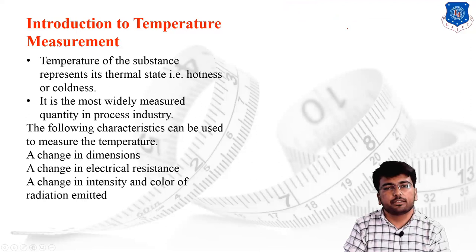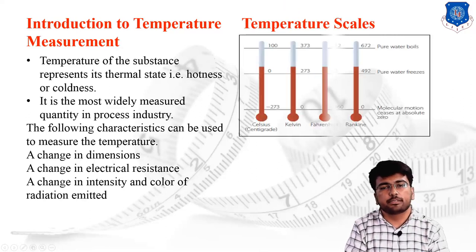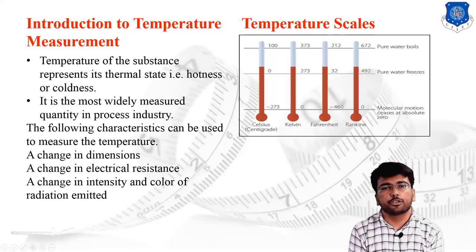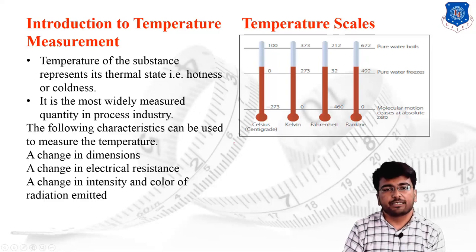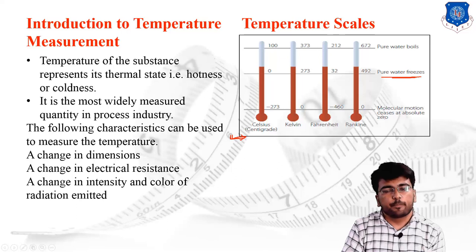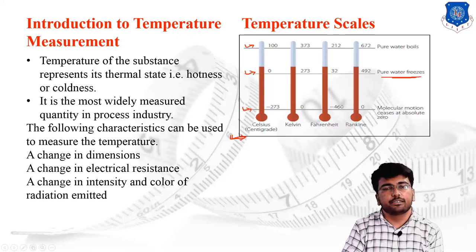By using this equation, we can measure temperature. Now, temperature scales — we have defined many scales for the measurement of temperature. Just as we have different unit systems for pressure measurement, we have different unit systems for temperature. The first scale, the ideal scale, is the centigrade or Celsius scale. For pure water, when it freezes in the centigrade scale it shows zero; boiling condition of water is 100 degrees Celsius, and the absolute zero temperature is minus 273 degrees Celsius.